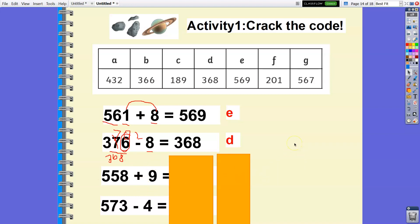Same thing you can do for the others. Pause the video and write the answers. Time is up. So we have to look for the ones digits. 558 plus 9: 8 plus 9 is 17, carry over 1, so 567 or letter G. And finally we have subtraction, 573 minus 4. The nearest multiple of 10 to 73 is 70. 70 minus 4 is 66, plus 3 is 69. Therefore the answer is 569.